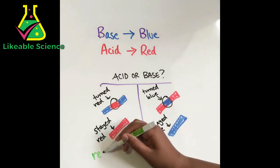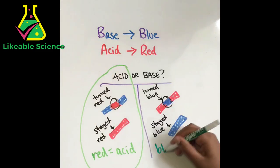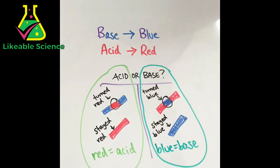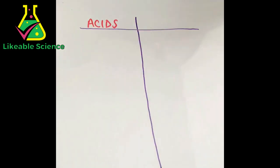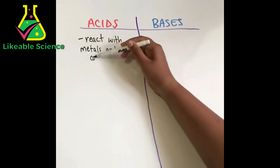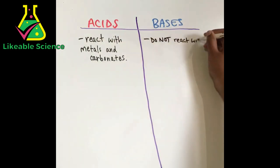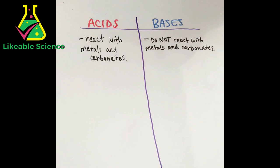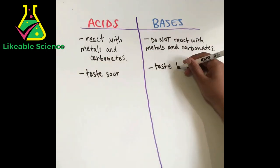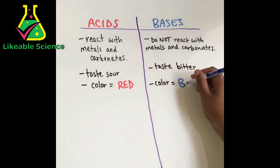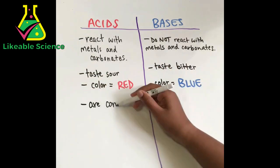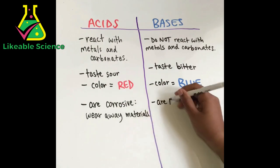Acids and bases have a lot of differences, so let's put them in a chart for you. Acids react with metals and carbonates while bases do not. Acids also taste sour and bases taste bitter. Acids are the color red and bases are the color blue. And last but not least, acids are corrosive, which means they wear away materials, and bases are nowhere near corrosive.